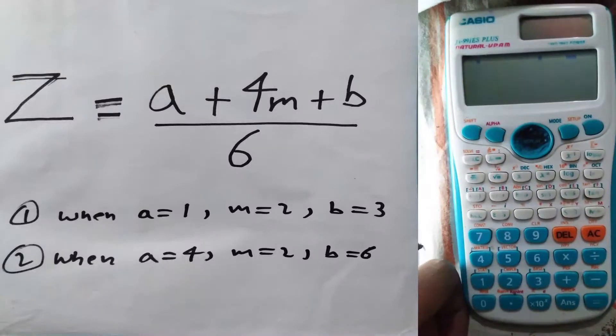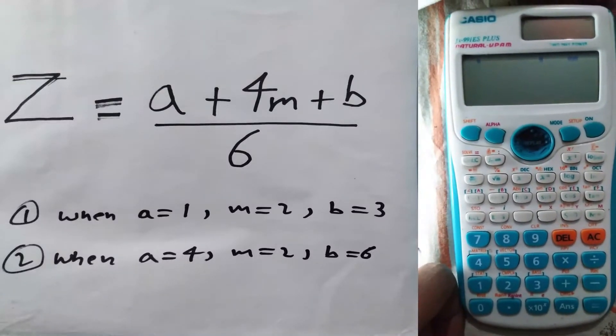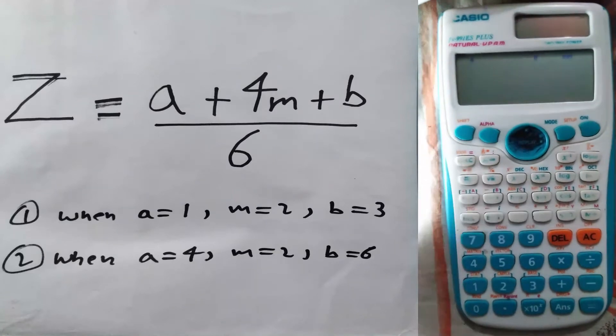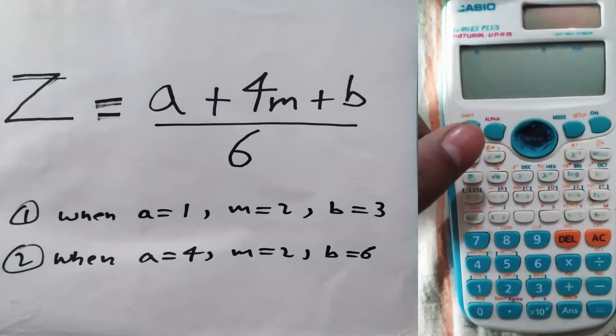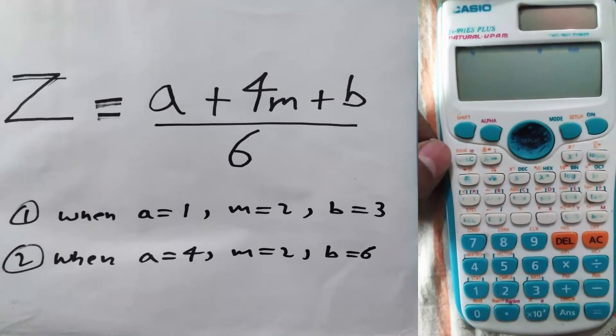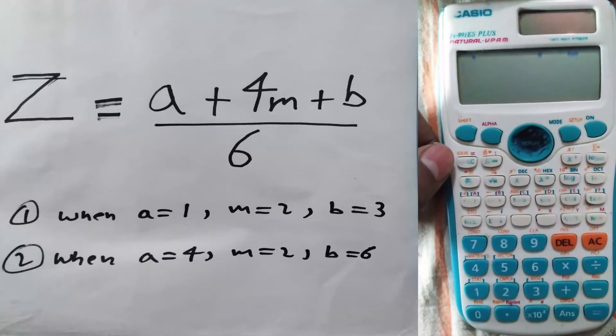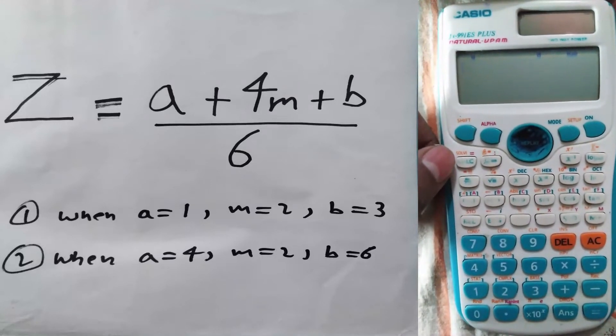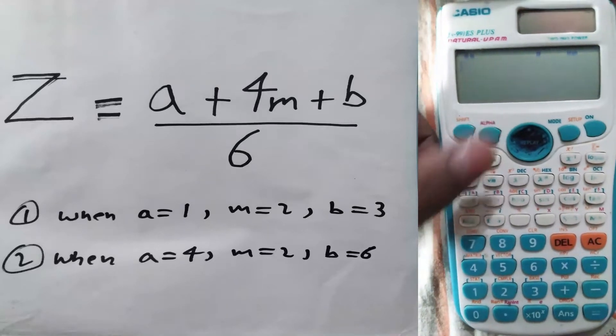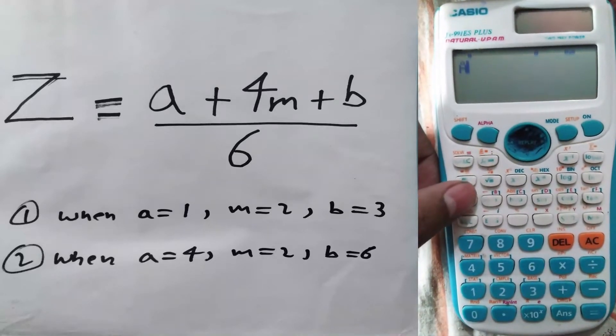What's up YouTube, welcome to the video. In this video we will make a function using our calculator, so let's begin. The formula is a plus 4m plus b divided by 6. We will type alpha a, then plus, then 4, then alpha m, plus alpha b.